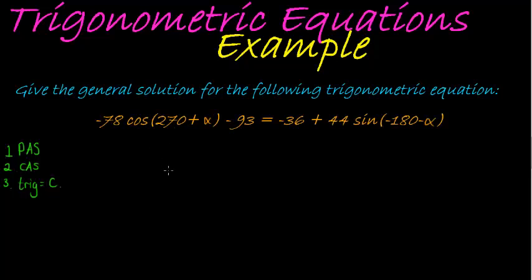So first, let's change it into positive, acute, and simple. We see 270, to do that we need our CAST diagram. Let's see, ASD, there's our CAST diagram.